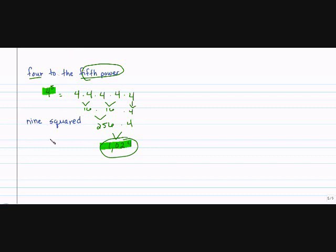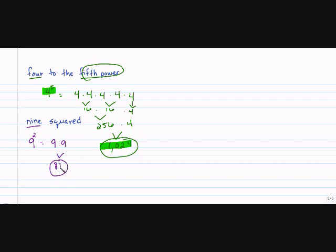Let's do the next one: 9 squared. My base is 9, and squared means to the second power — that's exponential form. And if I were to write it in standard form, I'd have 9 times 9, which equals 81. That would be my standard form.